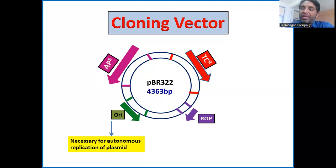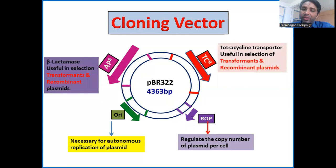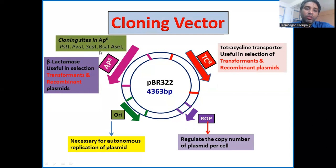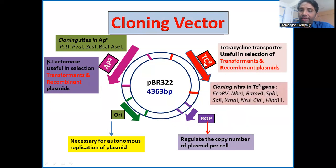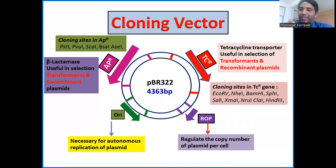These unique restriction sites facilitate cloning of the gene of interest. In the ampicillin resistance gene, restriction sites such as PstI, PvuI, ScaI, BsaI, and AseI are present. In the tetracycline resistance gene, there are around nine different unique restriction sites. Today I will use the BamHI restriction site — with recognition sequence GGATCC — to clone my gene of interest into pBR322.